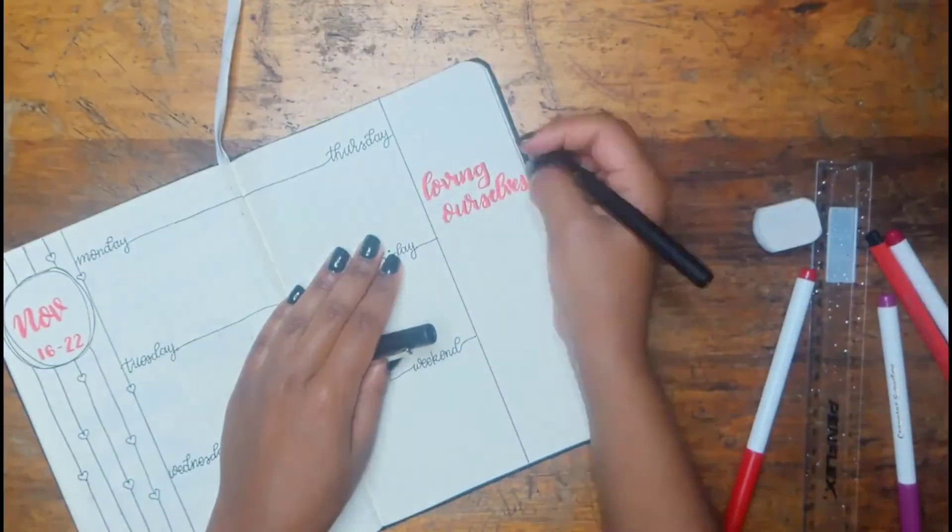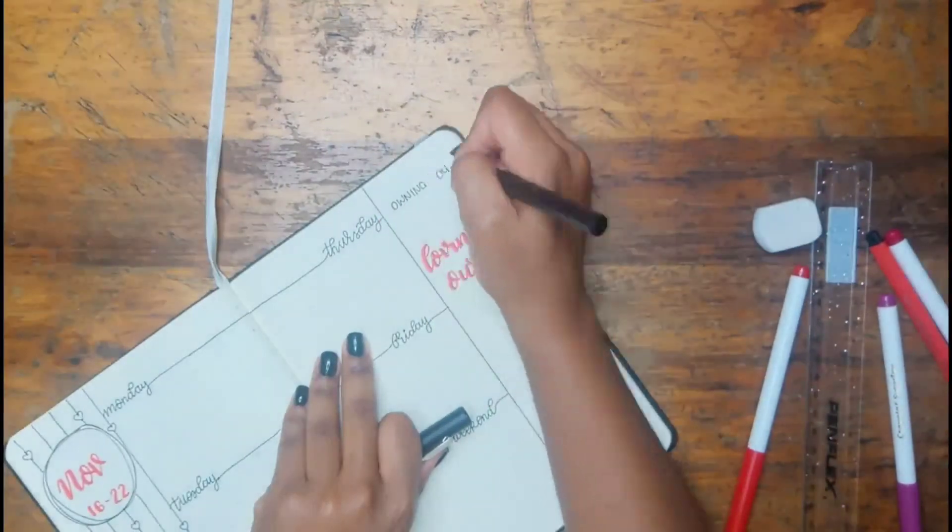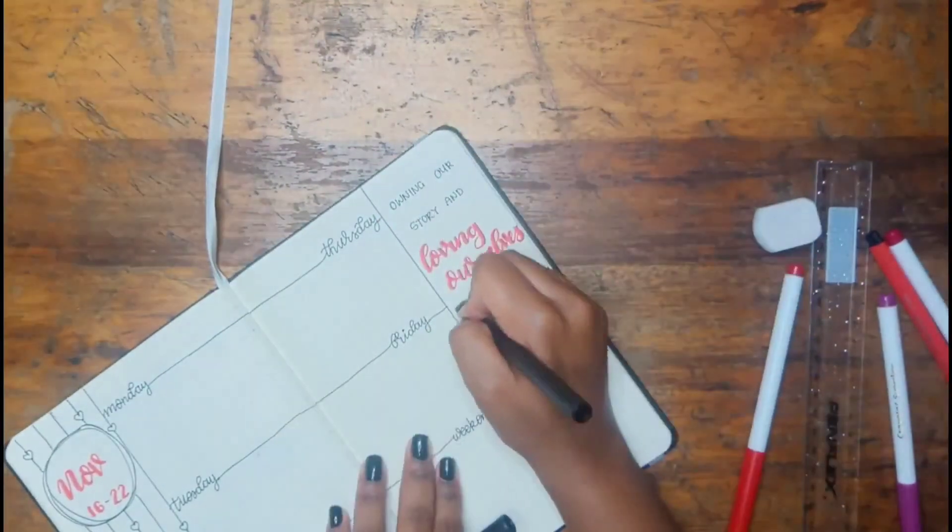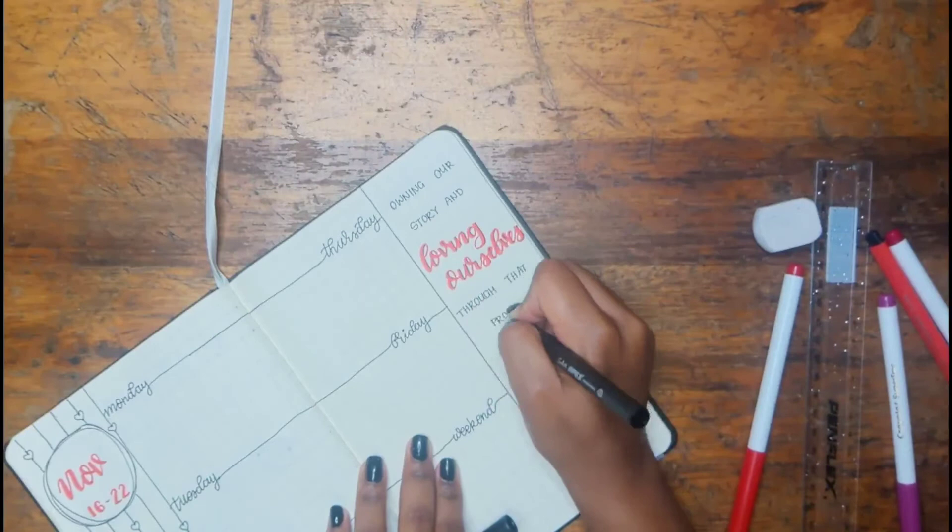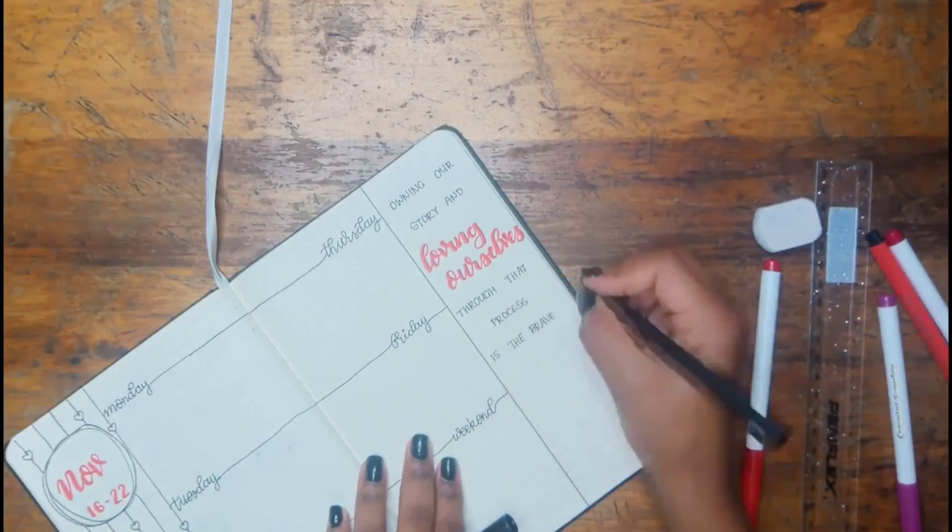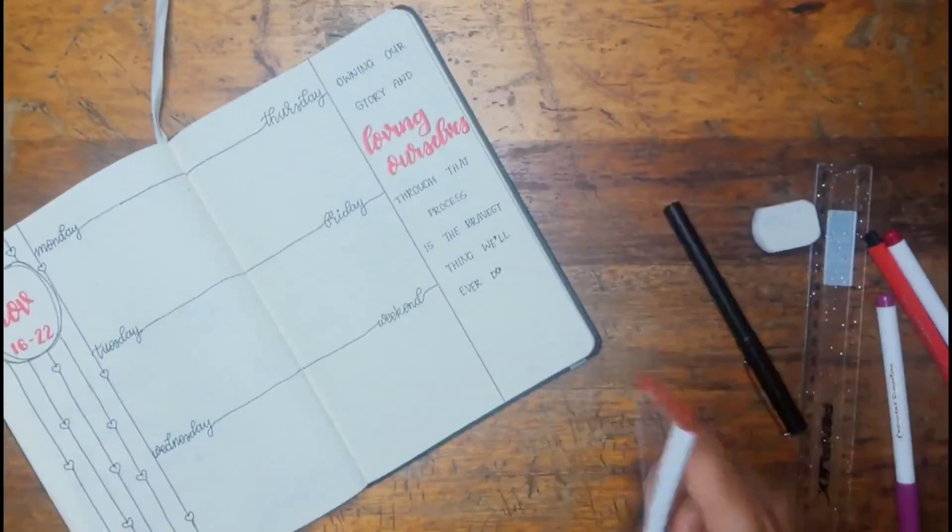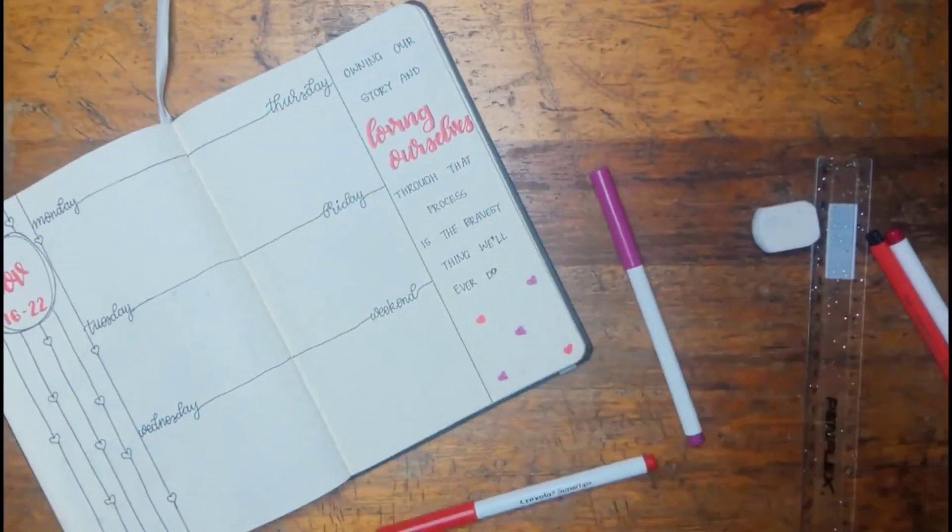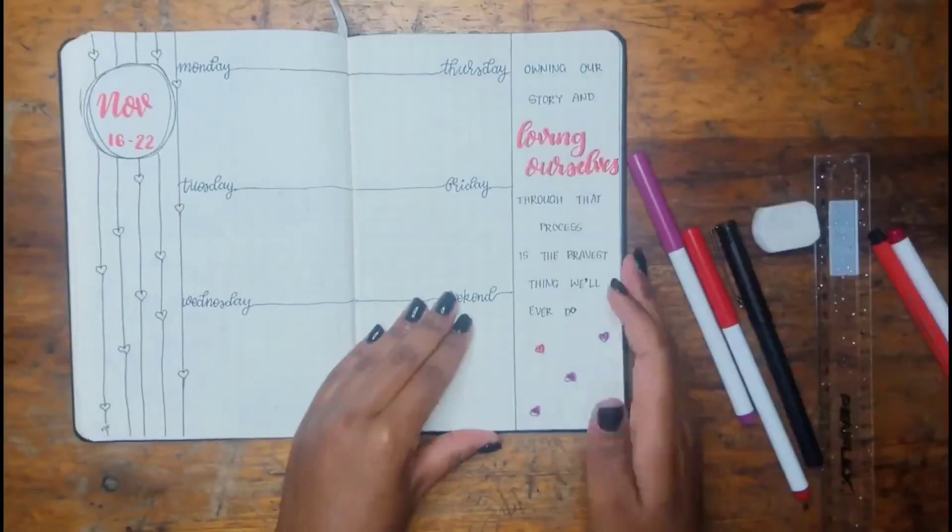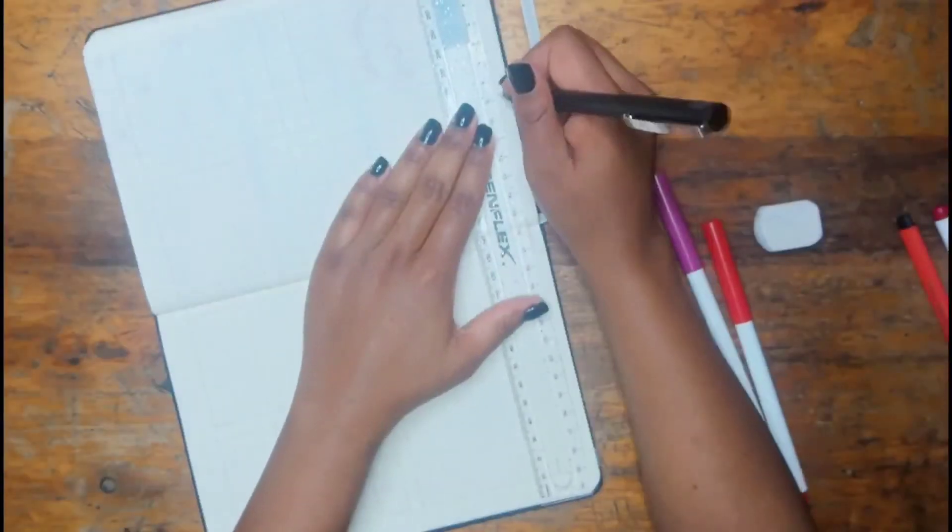The quote for this weekly spread says 'Owning our story and loving ourselves through that process is the bravest thing we'll ever do.' So I just threw in that quote and added some mini hearts.